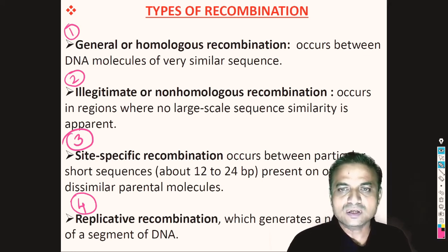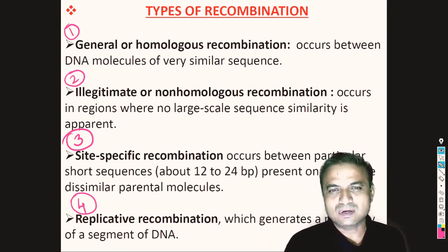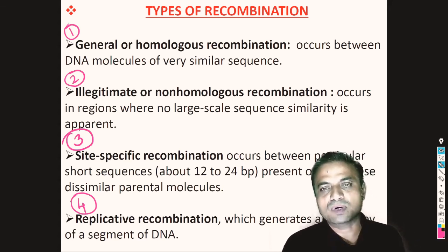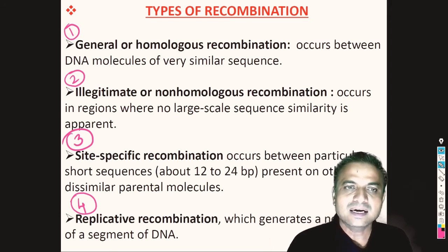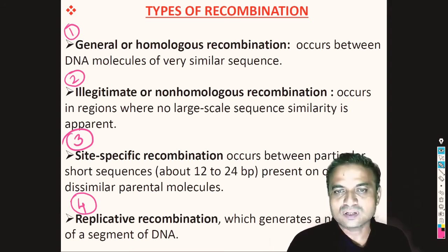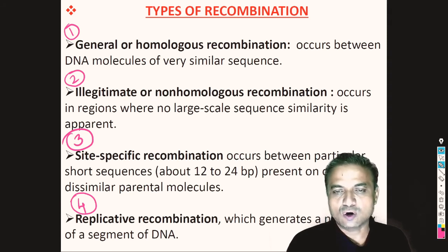The second type is illegitimate or non-homologous recombination, where there is no large-scale similarity between the recombining sequences. This type of recombination inserts DNA at random points, resulting in mutations, which we will see in detail afterwards.